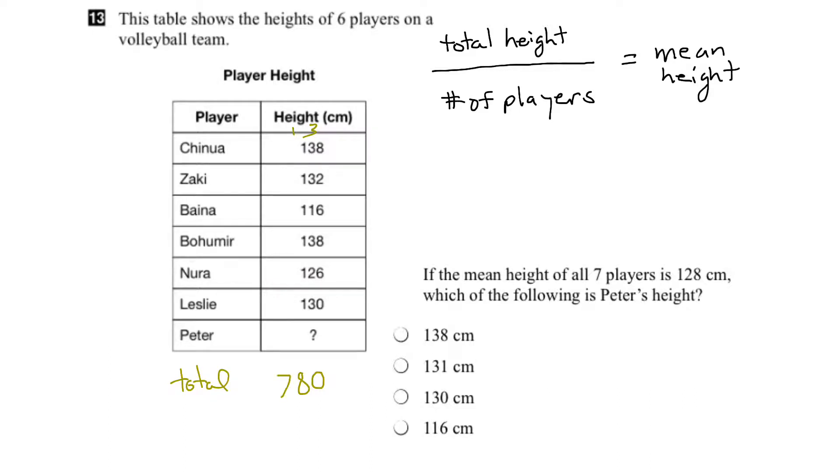So we've got 780 centimeters, but don't forget we also have to add in Peter's height, which we don't know. So what we're going to do is say the total is 780 plus a question mark for Peter's height.